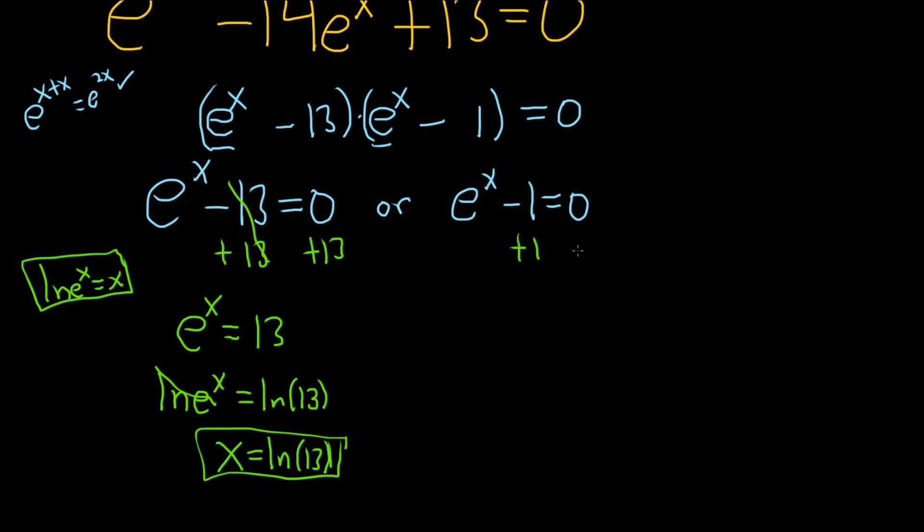And then here you add 1. So plus 1 plus 1. So we get e to the x equals 1. And the same thing. To get rid of the e, you just put the natural log on both sides. So ln e to the x equals ln 1. And these cancel, so you get x. And then this is just ln 1, which is 0.